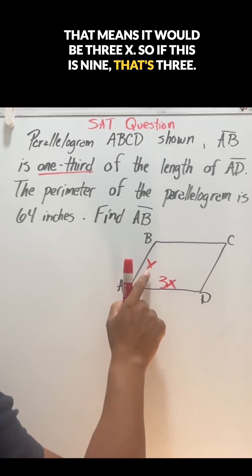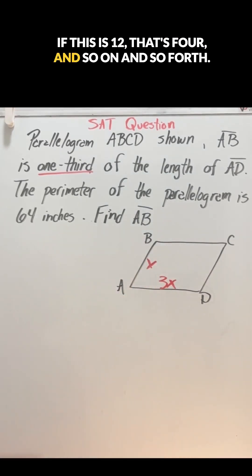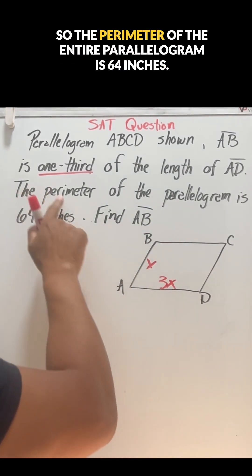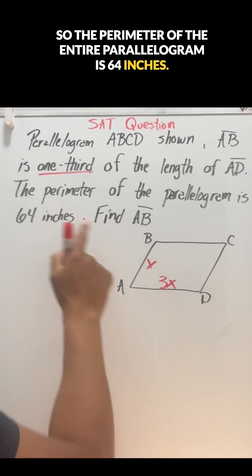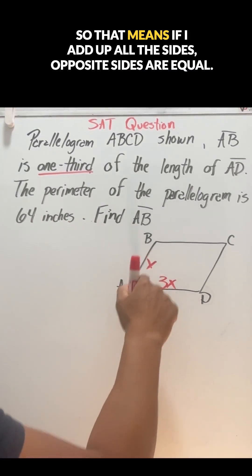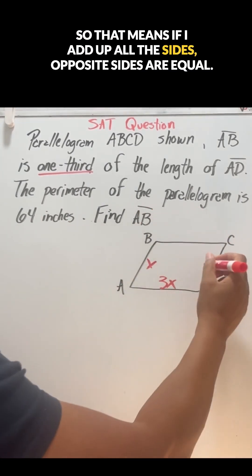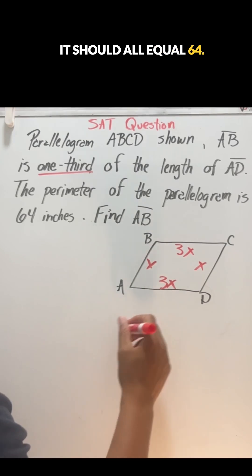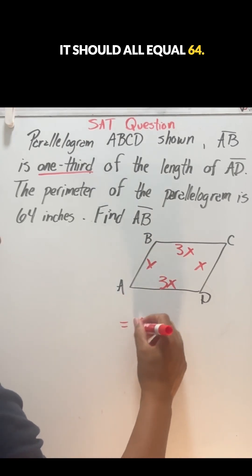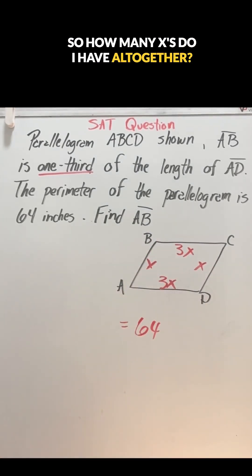So if AD is 9, AB is 3. If AD is 12, AB is 4, and so on and so forth. The perimeter of the entire parallelogram is 64 inches. If I add up all the sides — and opposite sides are equal — it should all equal 64. So how many X's do I have altogether?